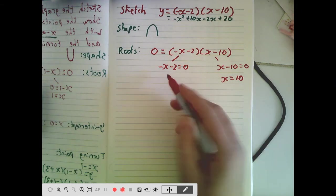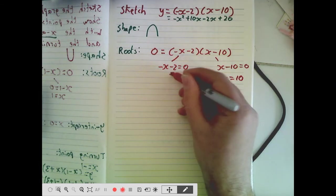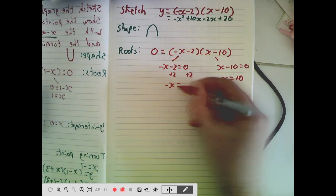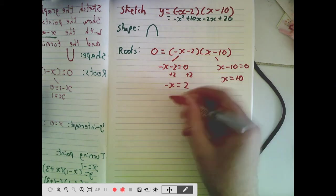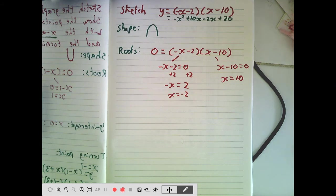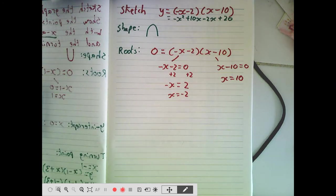Okay, maybe this one's slightly harder. Negative x take 2. Let's just have a little think. If we rearrange this by adding 2 to both sides, we're going to get negative x is equal to 2, which would suggest that x is equal to negative 2. Okay, so we've found the shape and we've found the roots.